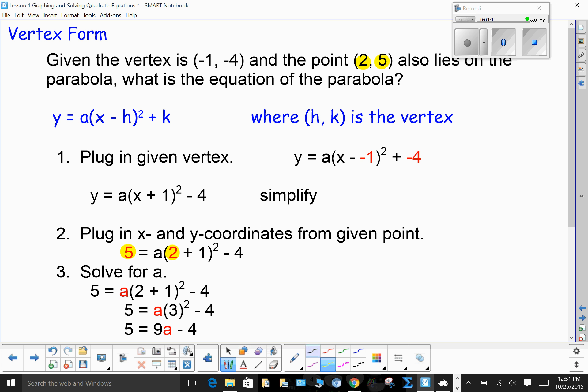This means that we take h and we plug it in and we take k and we plug it in. That means we're left with just a. So we have y = a(x - (-1))² + (-4). Simplifying that down, we have y = a(x + 1)² - 4.